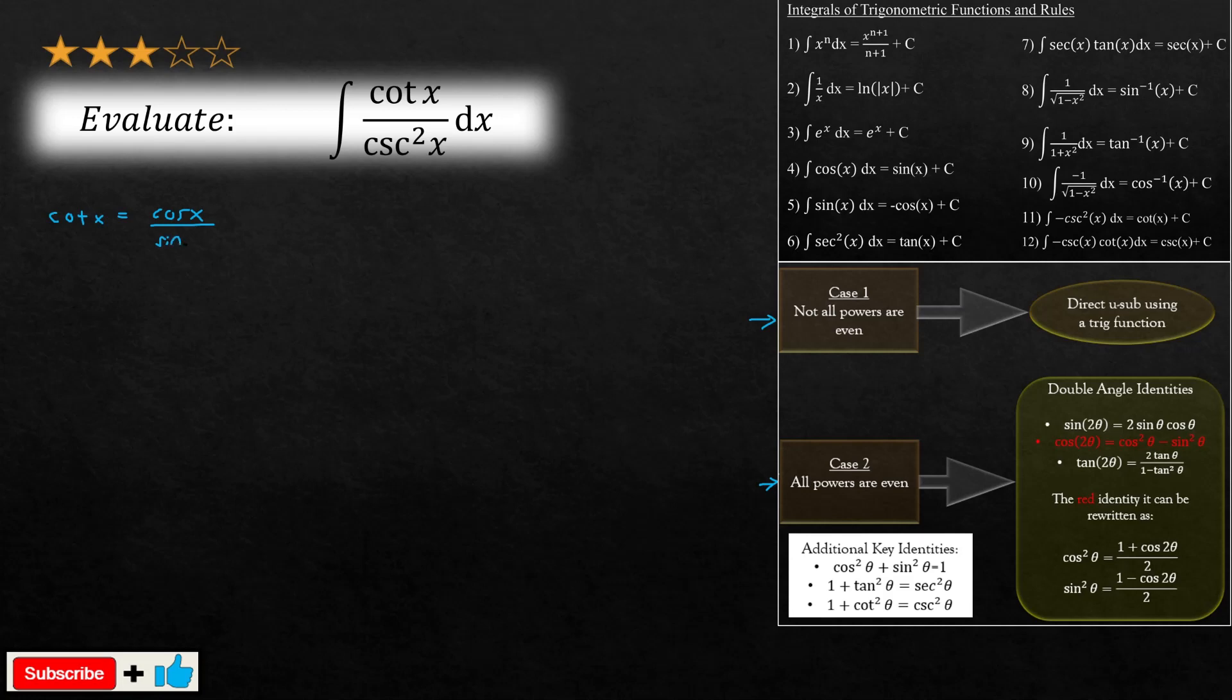And we know that secant squared of x - one over secant squared of x could be rewritten as sine squared of x. You're going to see something very lovely play out in front of your eyes.